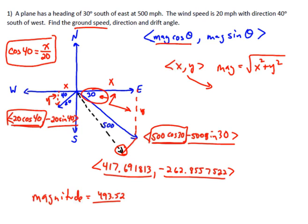You're always going to do tangent of the angle, which is the absolute value of the y over x. In my case, it's going to be the absolute value of 262.855 over 417.69183. The way I solve that is take the inverse tangent of this. I'll type in the 262.855 divided by 417.